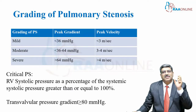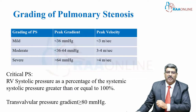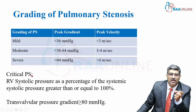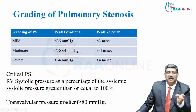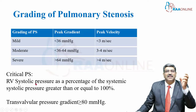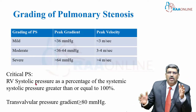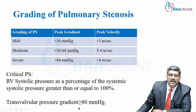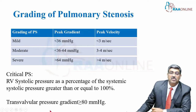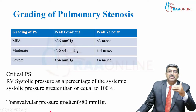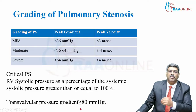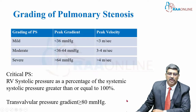Critical pulmonary stenosis is when the RV systolic pressure is greater than or almost equal to the LV systolic pressure. In critical pulmonary stenosis, the transvalvular gradient is greater than 80 mmHg.